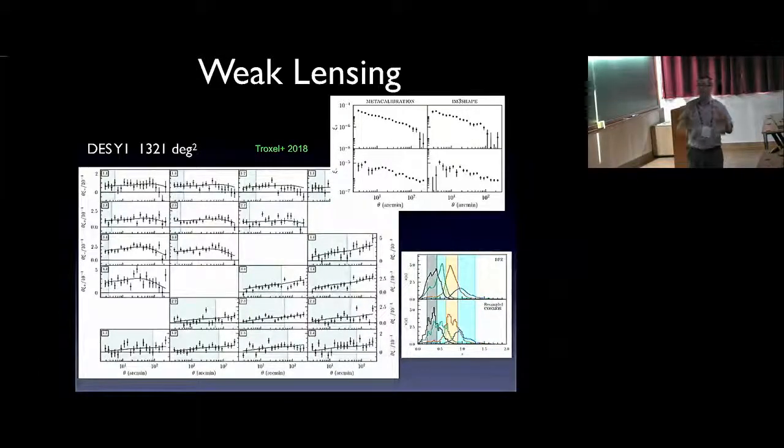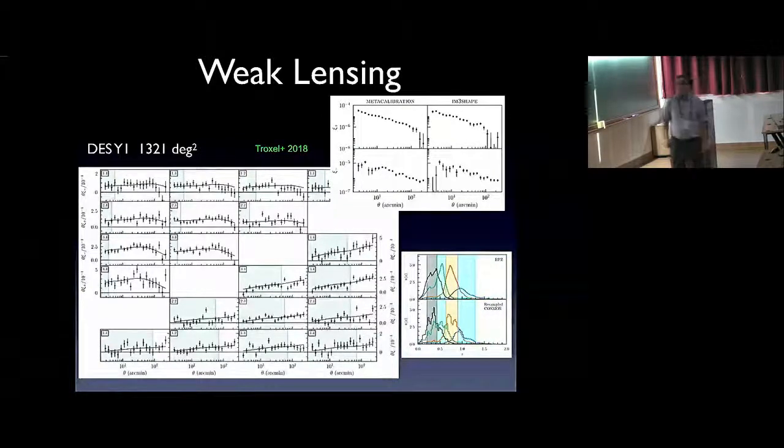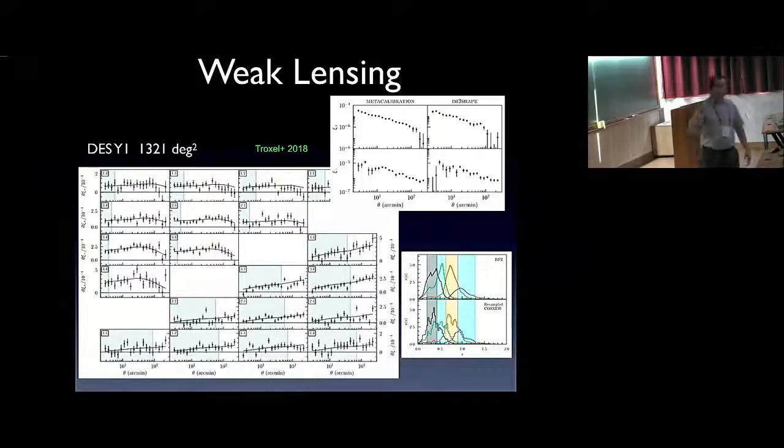That gives a combination of correlation functions which looks like this, a kind of complicated plot. You see this correlation function corresponding to the same redshift bin along this line here. And also, all the cross-correlations between the different bins. As I said, there are two correlation functions. So this gives a kind of matrix of correlation functions. Then one can predict the expected signal for the given cosmological model and fit and get constraints on the model.